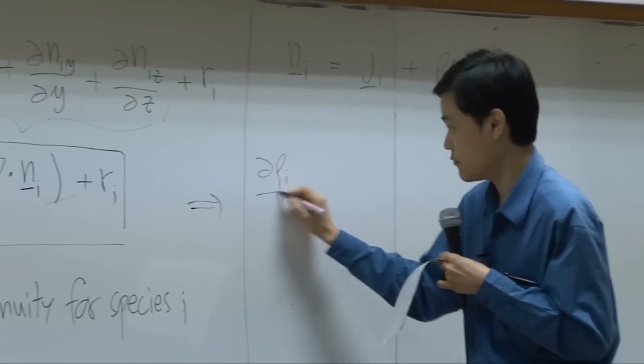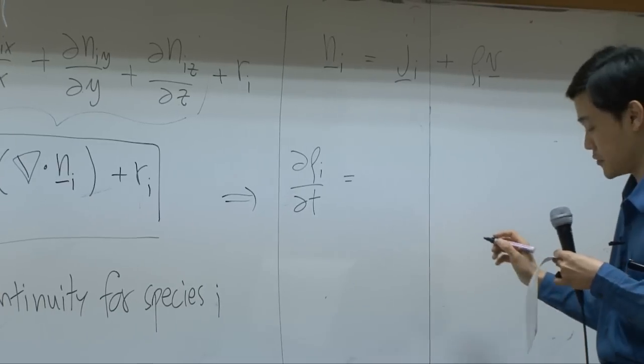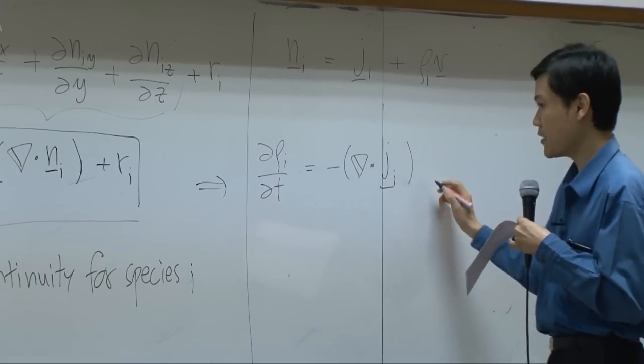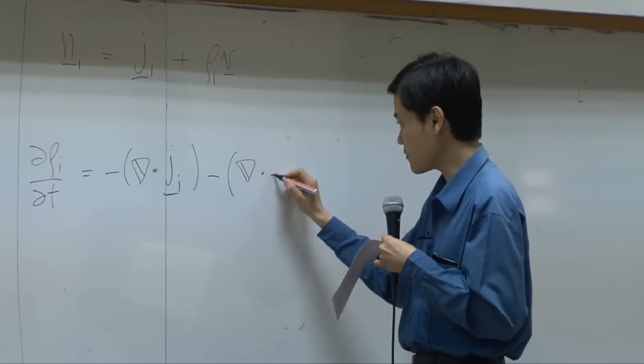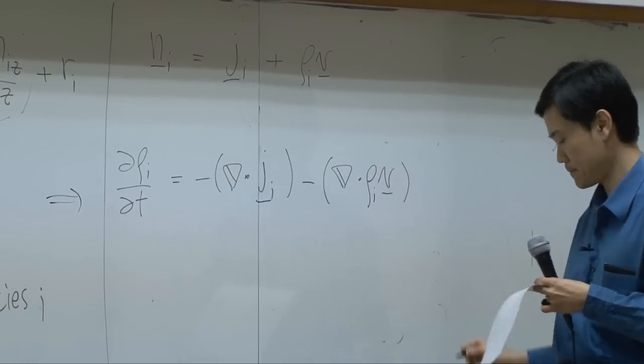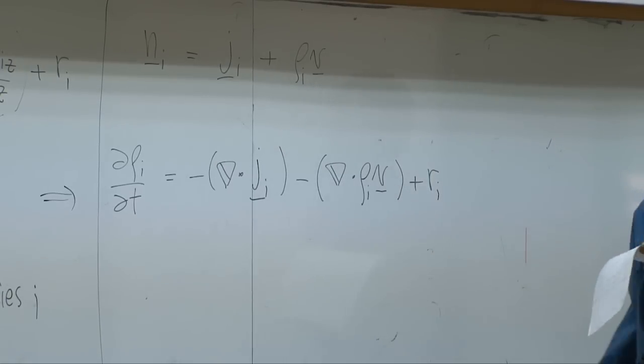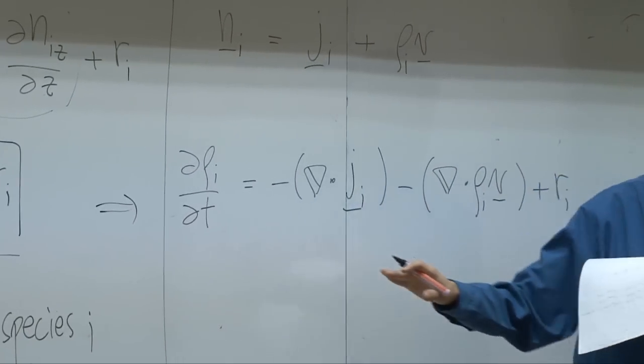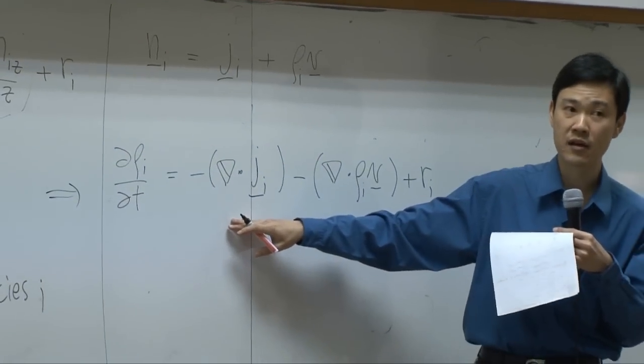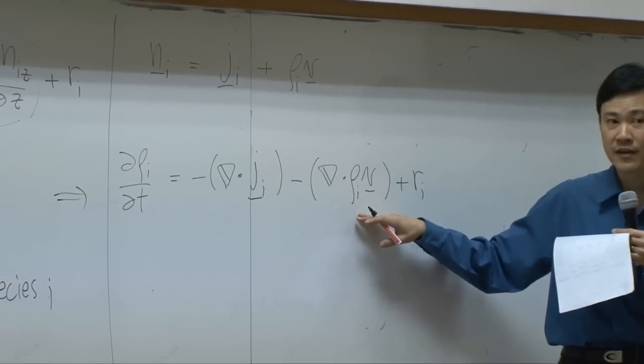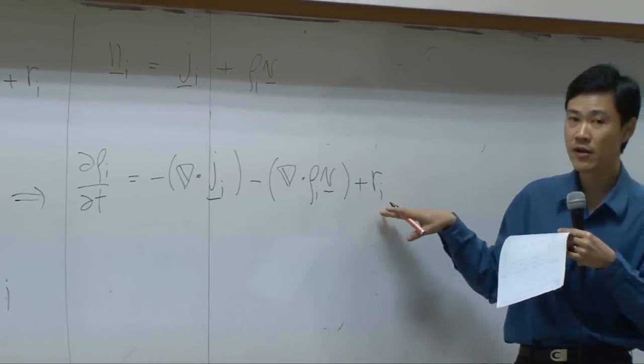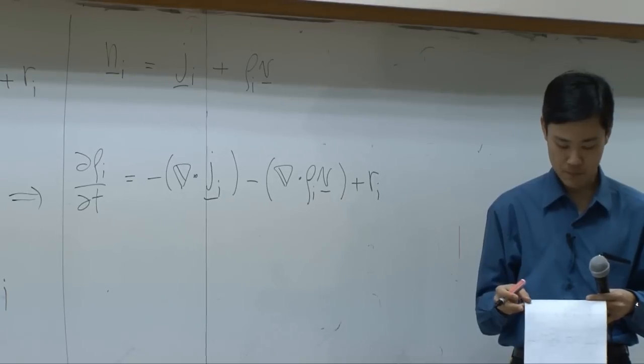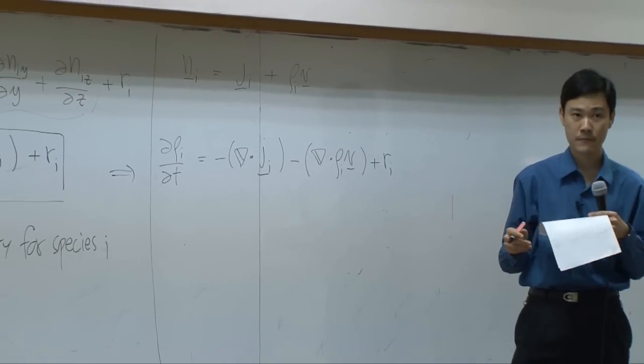So if you plug this back to there, you will have d(rho_i)/dt equal to minus del dot j_i minus del dot (rho_i v) plus r_i. So by the meaning, it means that accumulation of species i will be resolved from net diffusion of i into the system plus net convection to the system and generation rate. It's just the same thing.